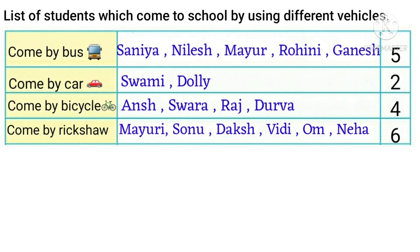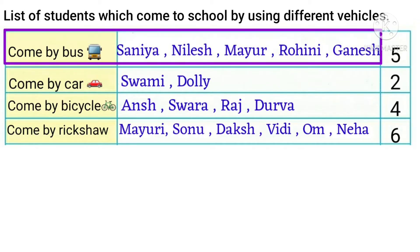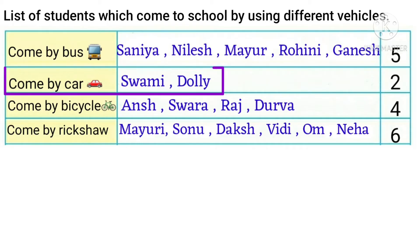Let's start with this example. This is a list of students which come to school by using different vehicles. Students come by bus: Sanya, Nilesh, Mayur, Rohini and Ganesh. Students come by car: Swami and Tali.